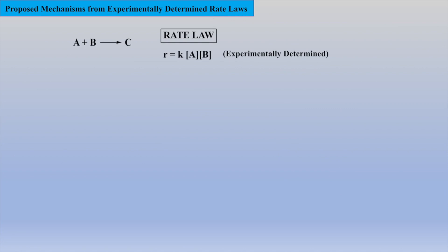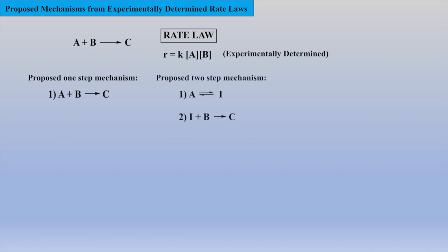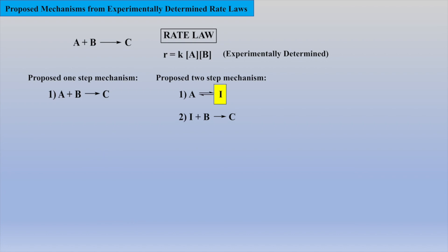Given an experimentally determined rate law for a reaction, we need to hypothesize a mechanism. A proposed mechanism is nothing more than a hypothesized single or multi-step reaction sequence that attempts to explain the order of events within a reaction. Each step of the hypothesized mechanism is called an elementary step. During these elementary steps, intermediates may be formed, but then they are consumed in later steps of the mechanism.